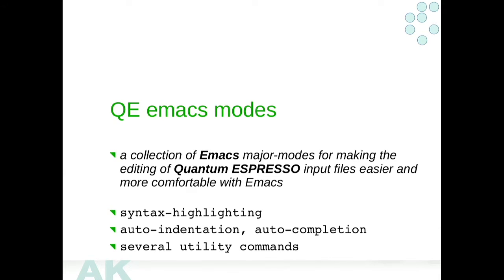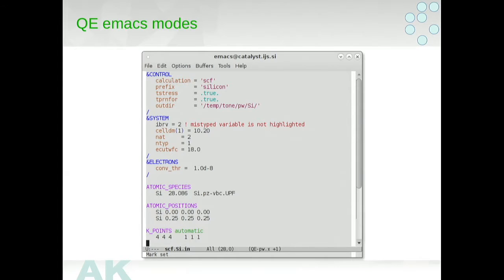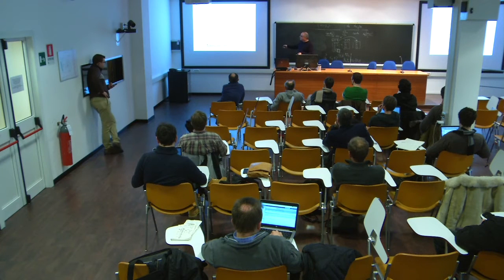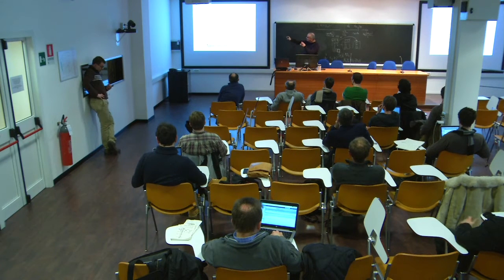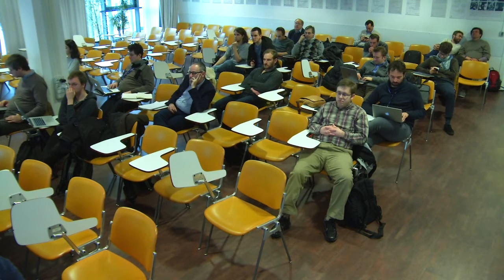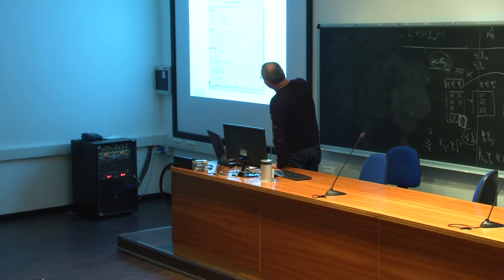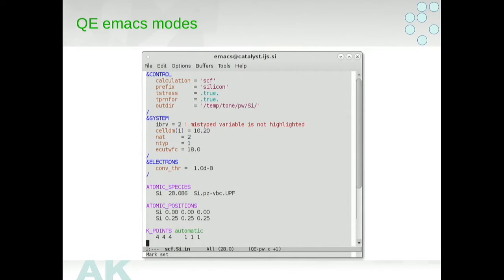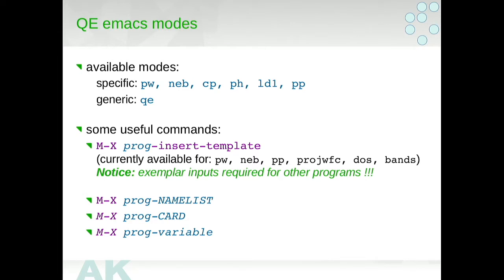So what these modes have is syntax highlighting, auto-indentation, auto-completion and some utility commands. Here you can see it. This is how the PW input file is opened in Emacs. Because this was automatically generated, these major modes know all the variables and all the name lists and all the cards of Quantum Espresso. So we see they are colored. And if you make a mistake, some typo, then it's not colored. And this is a signal to the user that some mistake has been made.